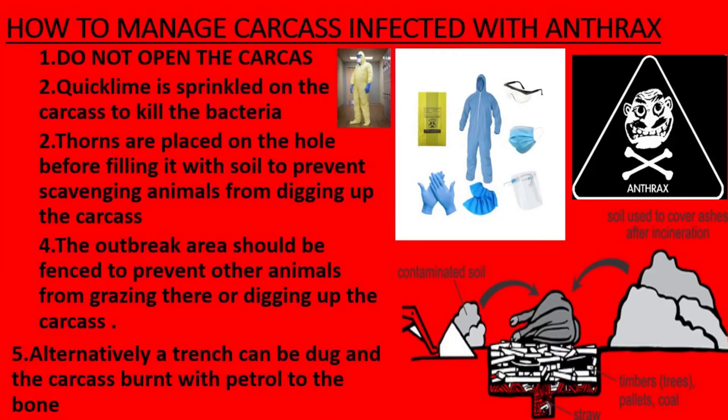How to manage a carcass infected with anthrax: Quicklime is sprinkled on the carcass to kill the bacteria. Thorns are placed in the hole before filling it with soil to prevent scavenging animals from digging up the carcass. The outbreak area should be fenced to prevent other animals from grazing there or digging up the carcass. Alternatively, a trench can be dug and the carcass burnt with petrol down to the bone.